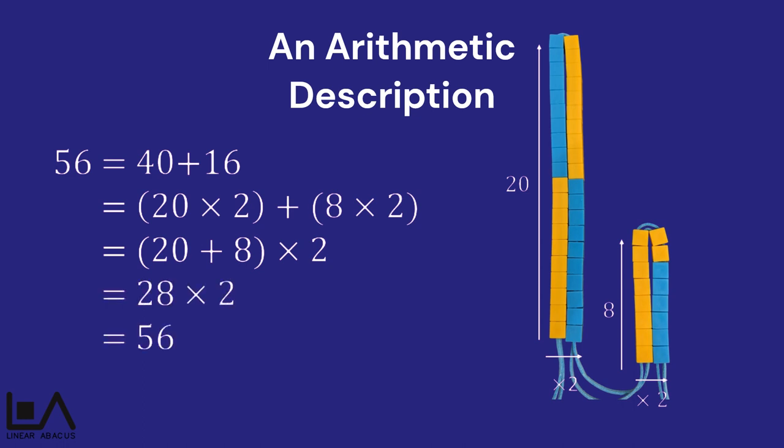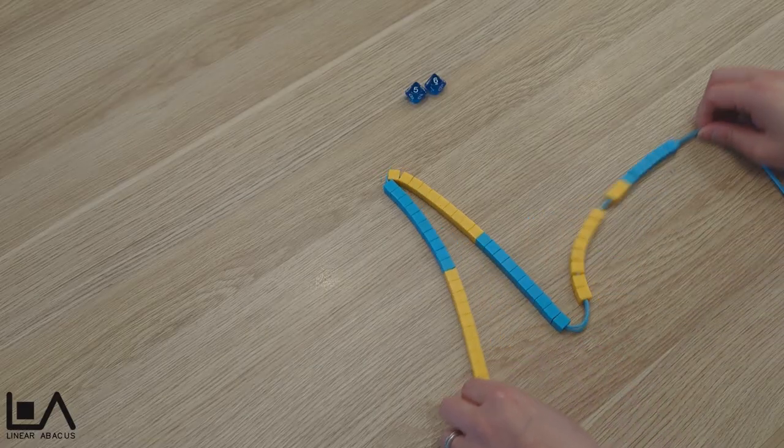In the next step, I factored out the 2, as I noticed that both arrays had the numeral 2 as an operator. Now all I need to do is multiply 28 by 2. This can be presented as a new model.